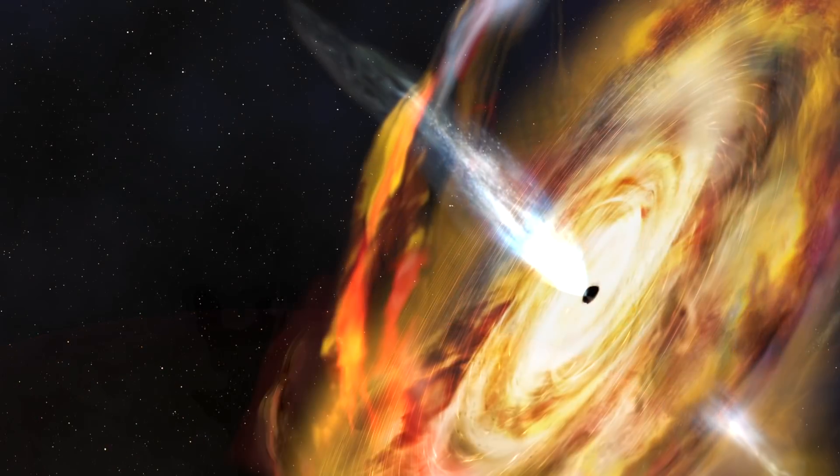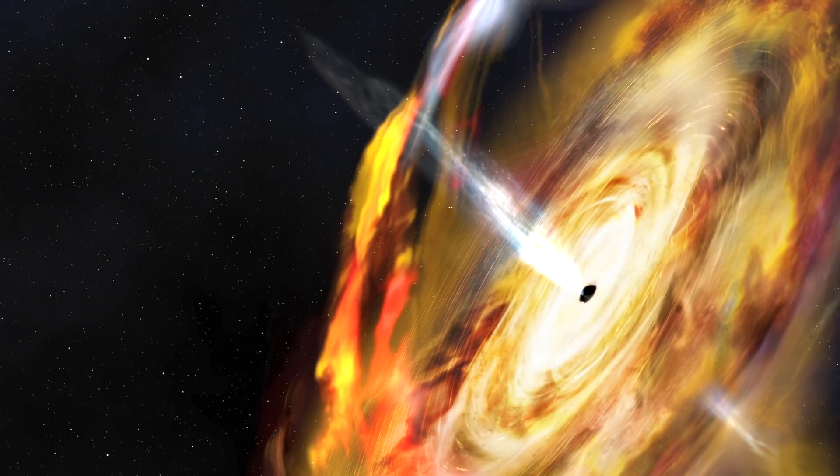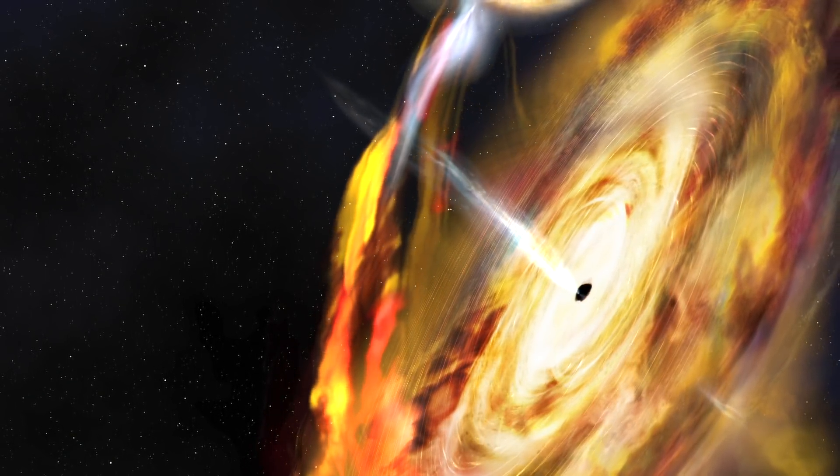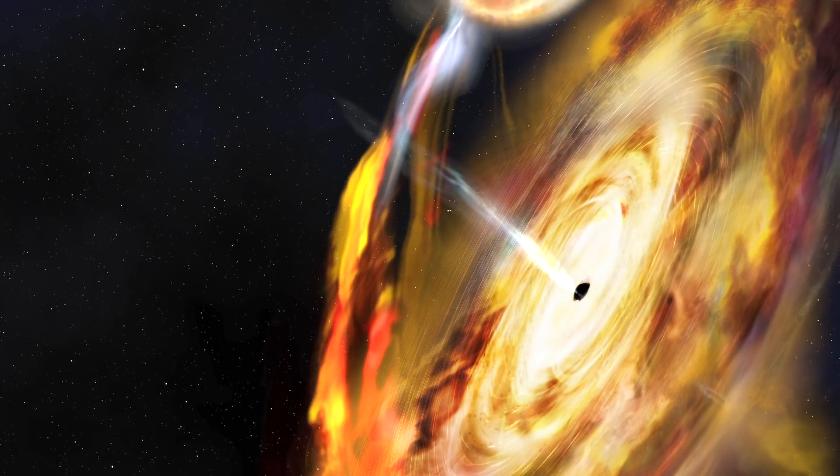The team and I estimated that the corona contracted from roughly 100 miles to only 10. The discovery reveals that stellar mass black holes behave similarly to their supermassive cousins, which are millions to billions of times the sun's mass.